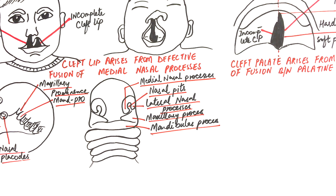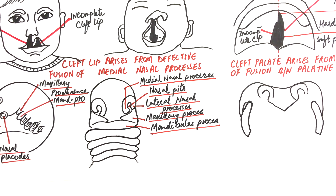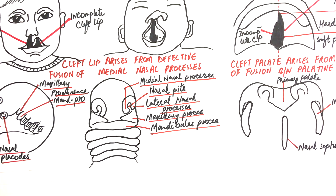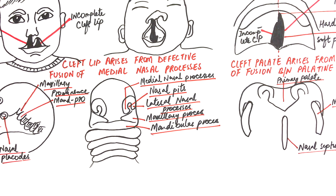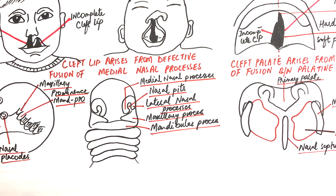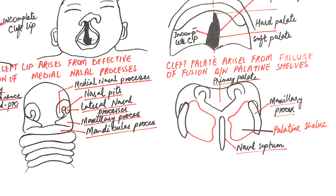Let's now look at the origin of the cleft palate. In the palatal view of the embryo, we can observe the primary palate, the maxillary processes, and the nasal septum. The primary palate, which originated from the fusion of the two medial nasal processes, is a small triangular portion of the palate located in the anterior portion of the maxilla — hence it is also called the premaxilla — and will later accommodate the maxillary incisors. Two processes called the palatine shelves extend medially from the two maxillary processes to meet at the center and form the secondary palate. Failure of the fusion of these two palatine shelves results in the formation of the cleft palate.